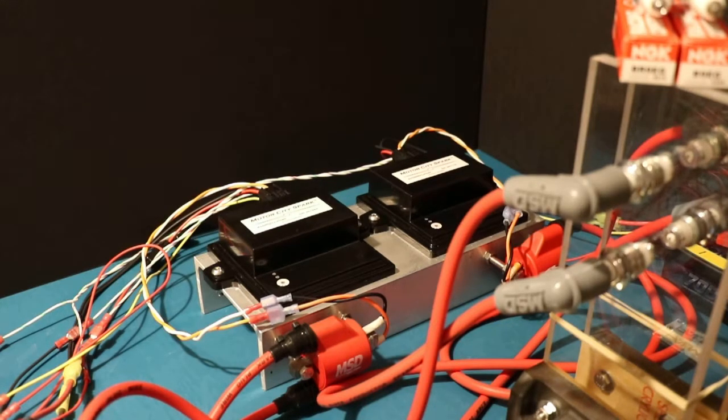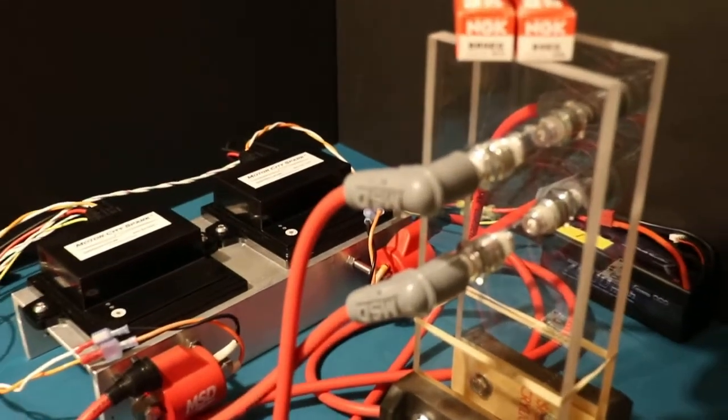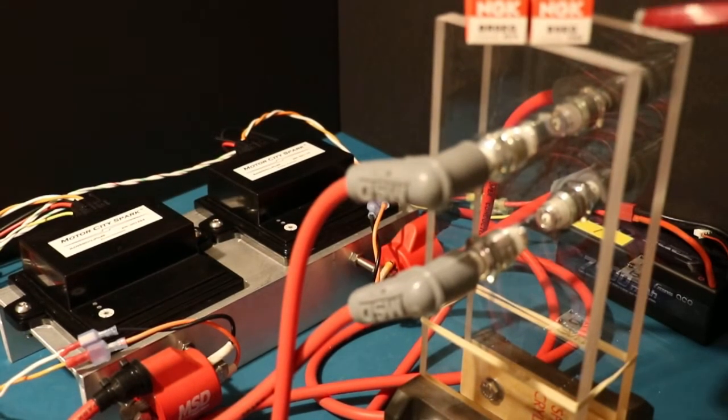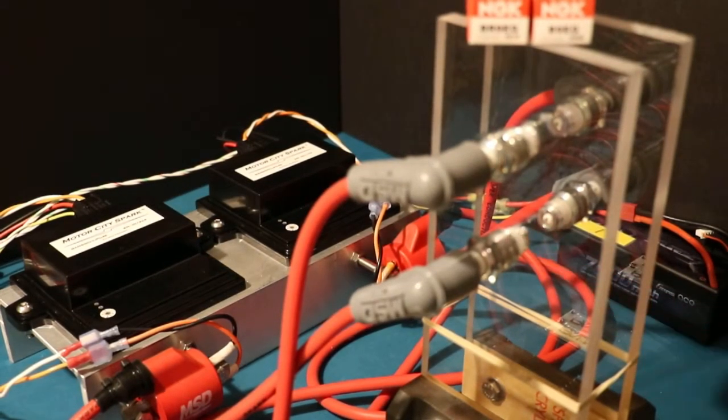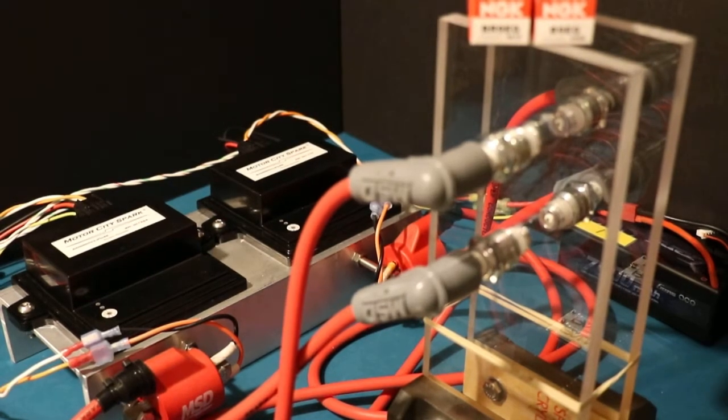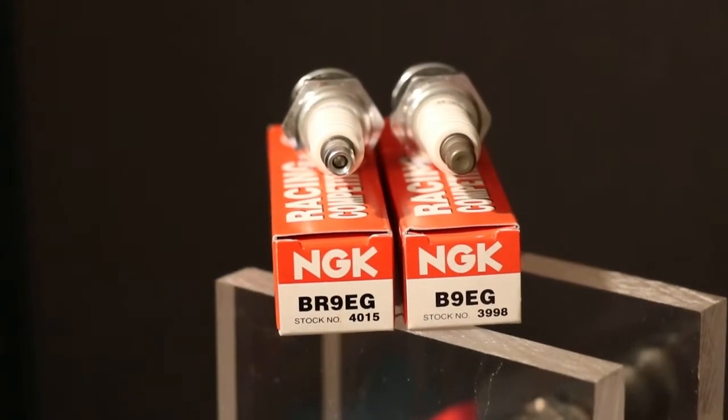If we come over here, you're going to see we have a standard half inch plexiglass plate that's drilled and tapped for the plugs. On the top, let's zoom in there, the plugs on the top are the BR9EG plugs, the resistor plugs.